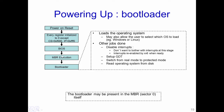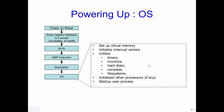Once the boot loader executes and sets up the processor and the GDT, switching from real mode to protected mode, it loads the operating system from disk. Protected mode is a 32-bit mode where we extend the memory region that can be accessed from 1 MB to the entire 4 gigabytes. We will not go into more detail about how protected mode is activated. Once the boot loader loads the operating system, it transfers control to the operating system.